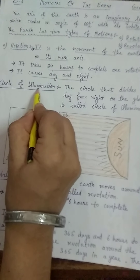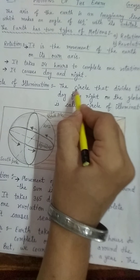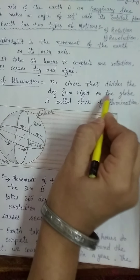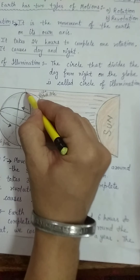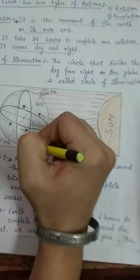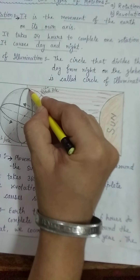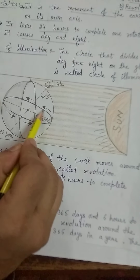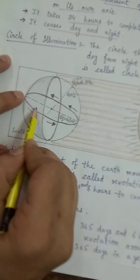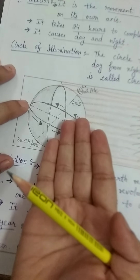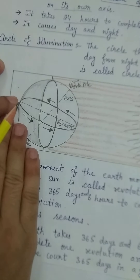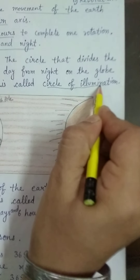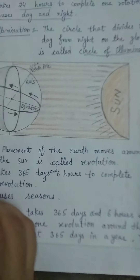Circle of illumination. The circle that divides the day from the night on the globe is called the circle of illumination. This circle moves from the north pole to the south pole, and it moves from east to west.